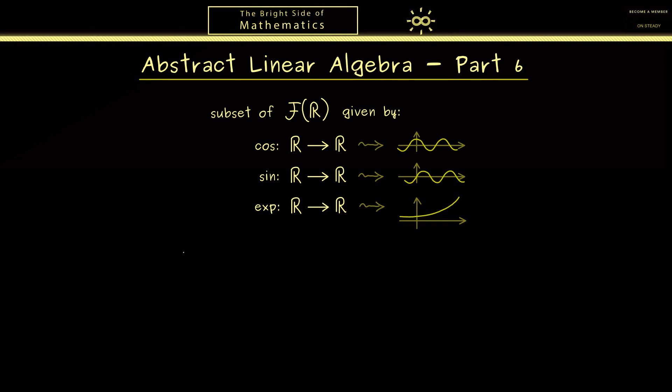Indeed, let's call the subspace U and let's define it as the span of these three vectors. So in short, we just write span of cosine, sine and exp. And now my first question for this video is, is this family given by the three vectors a basis for U?